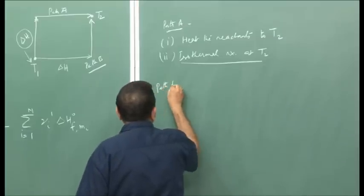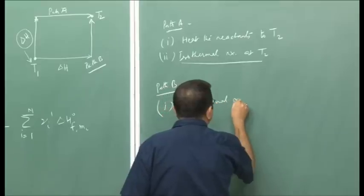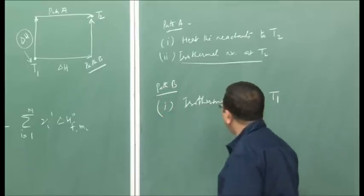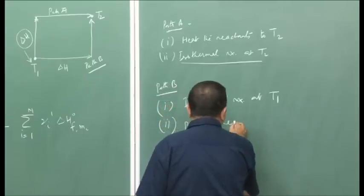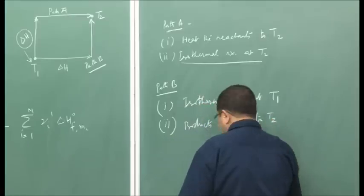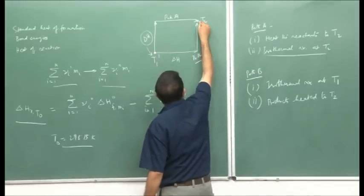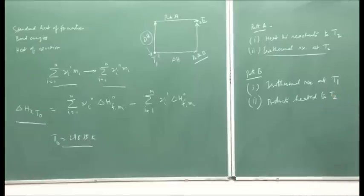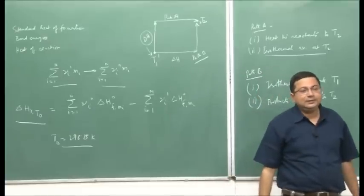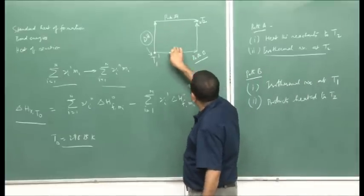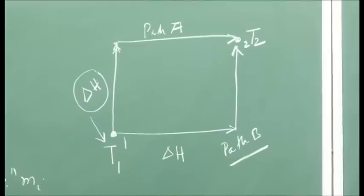Path B is an alternative path where first we have the isothermal reaction at temperature T1, and then the products are heated to temperature T2. For both cases we are going from state 1 to state 2 — the initial and final states are the same. According to Hess's law, the total heat evolved in path A is equal to the heat evolved in path B, because the total heat is independent of the path.